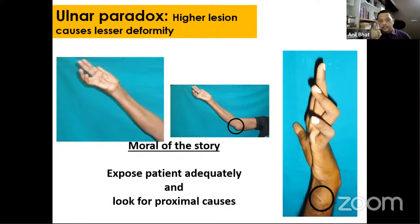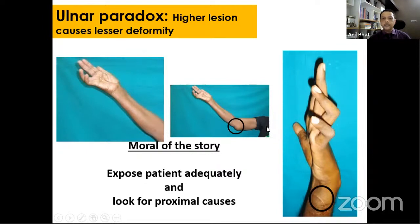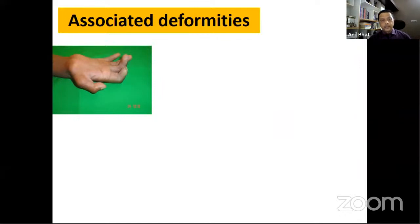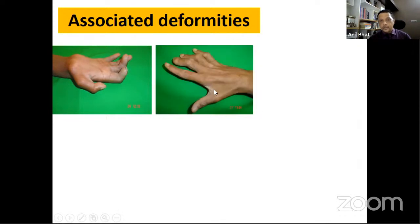The moral here is to expose the patient adequately and look for proximal causes. Students have missed higher injuries by not fully exposing the patient. Ideally remove the shirt and examine from the neck downward. The same principle applies to foot drop — examine all the way to the hip and spine. Also check for associated deformities: a completely flat hand with wasting of both thenar and hypothenar muscles suggests a total claw hand.